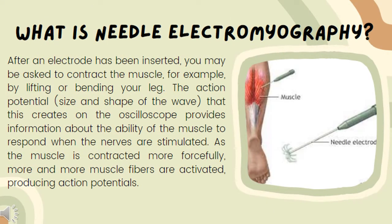After an electrode has been inserted, the patient may be asked to contract the muscle, for example by lifting or bending the leg. An action potential, or the size and shape of the wave that this creates on the oscilloscope, provides information about the ability of the muscle to respond when the nerves are stimulated.